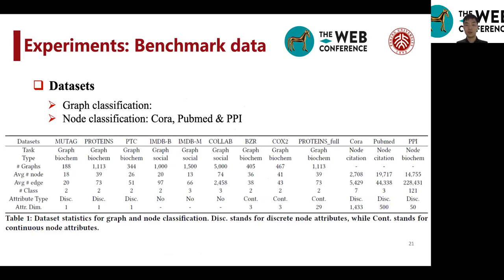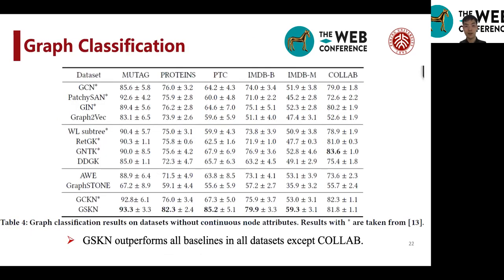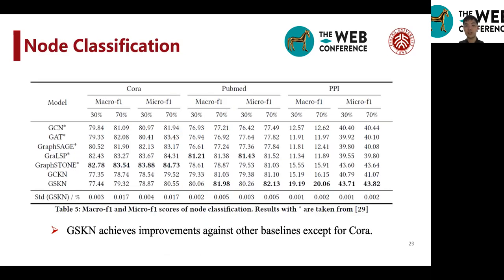And then we introduce our results on benchmarking datasets using graph classification and node classification datasets. And on graph classification, GSKN significantly outperforms all baselines in all datasets except Collab.